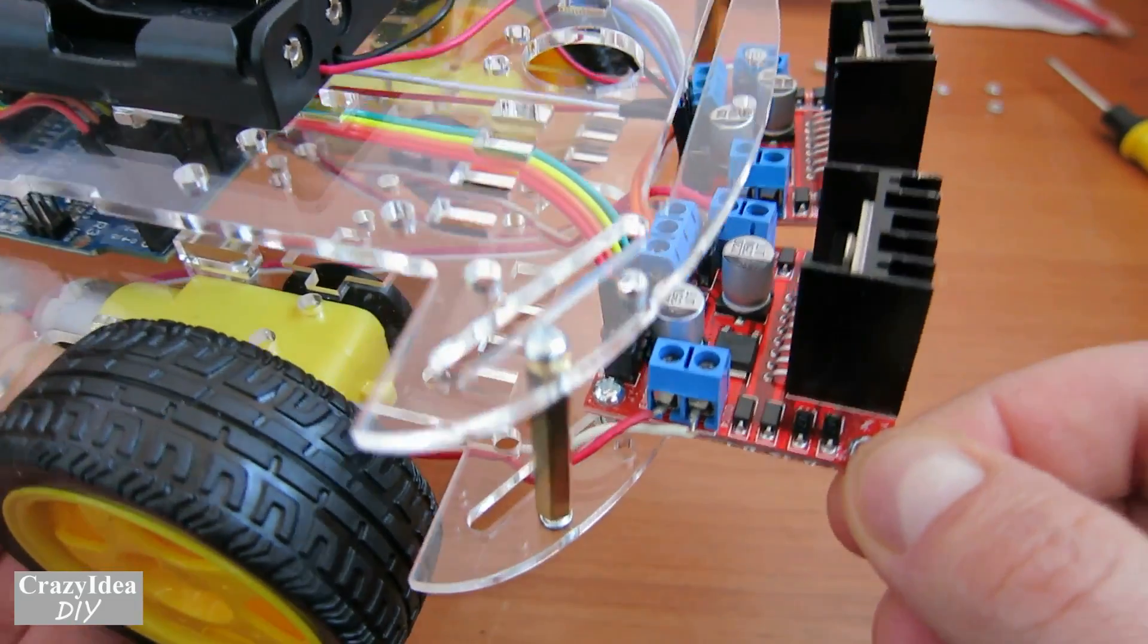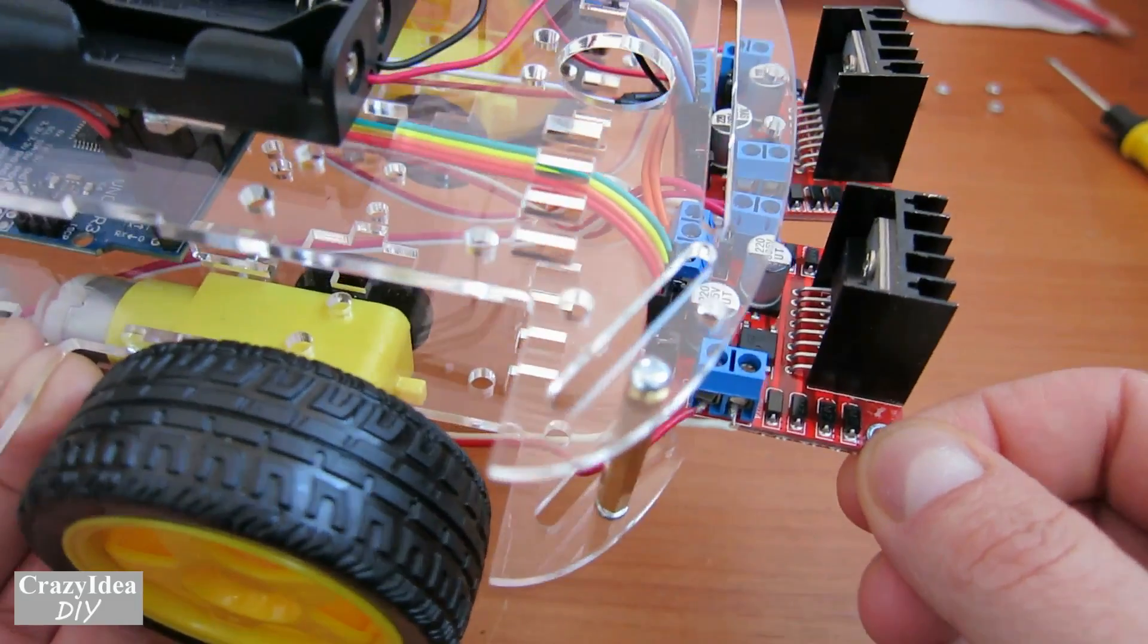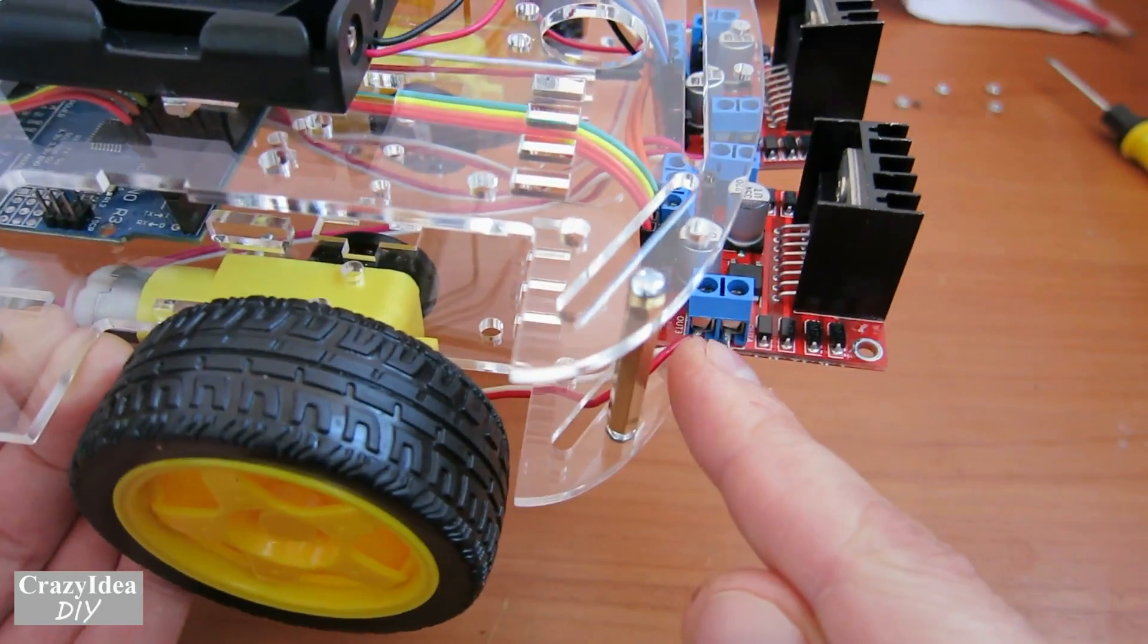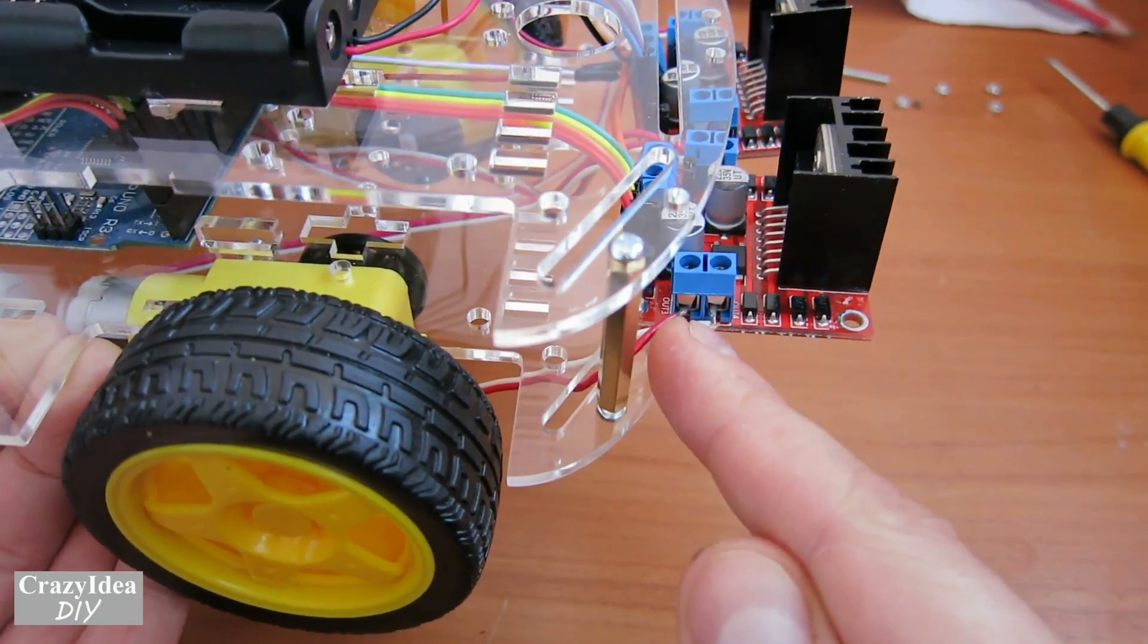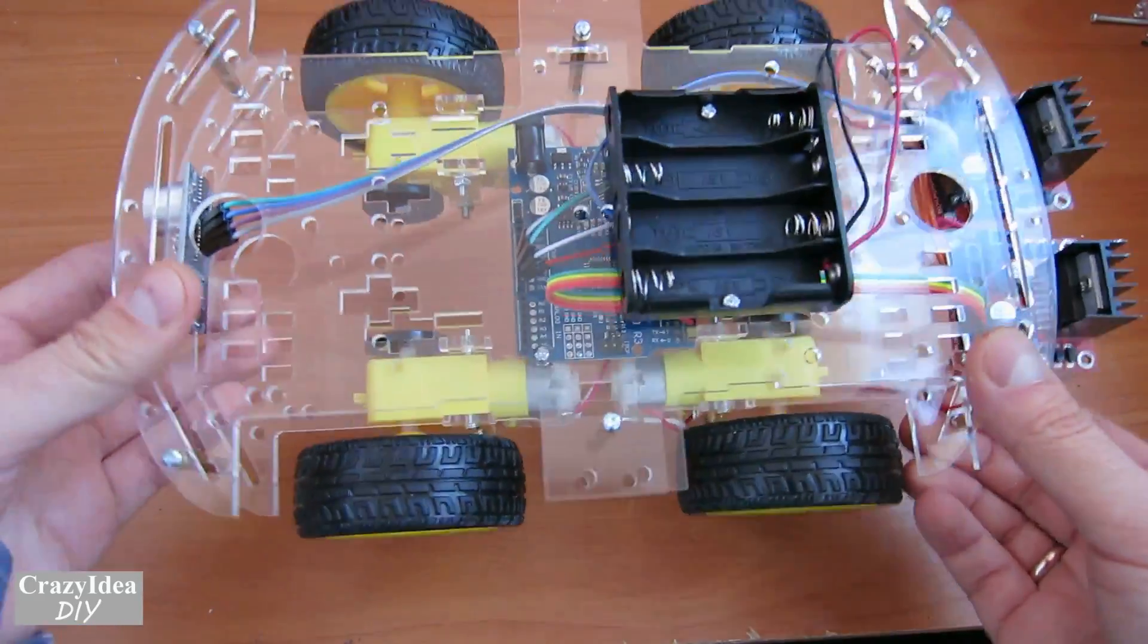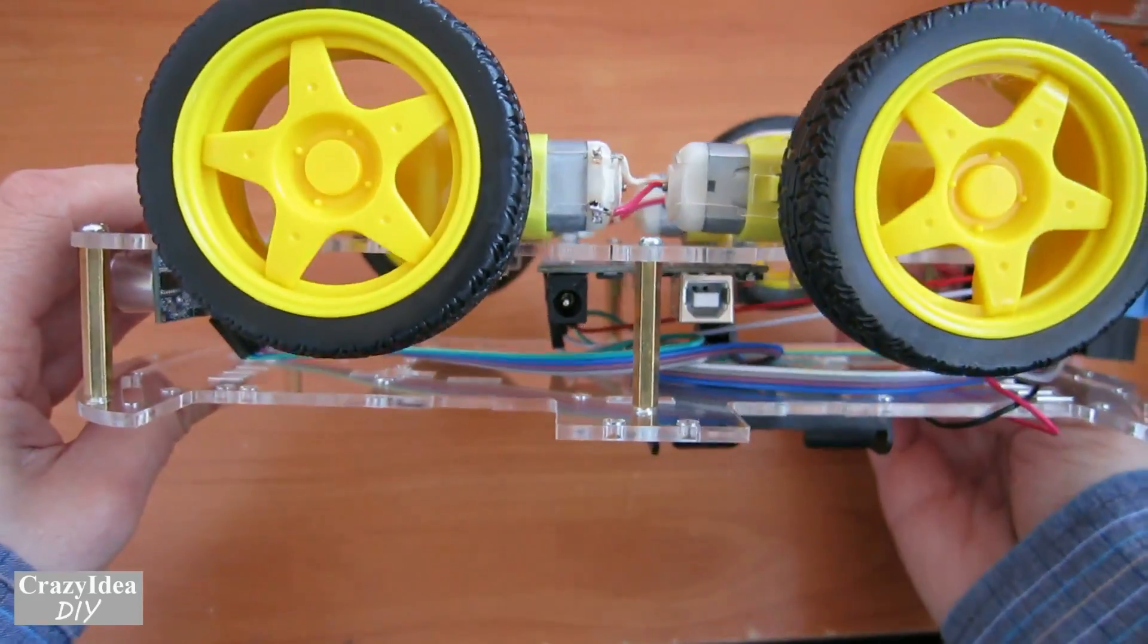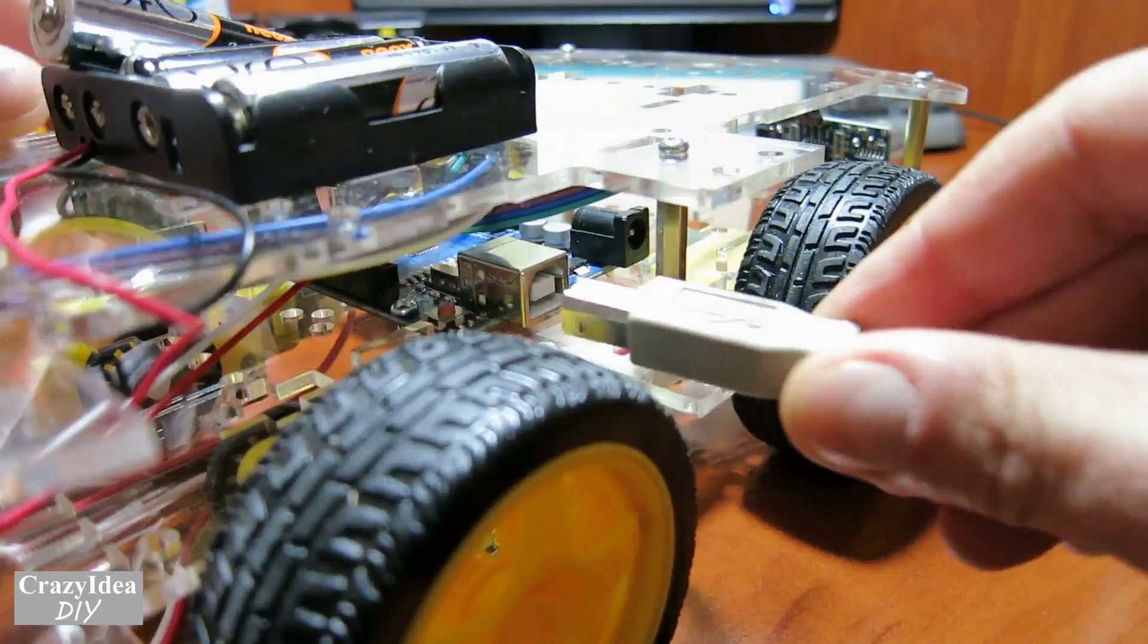So friends, if you see that some of the wheels spin in the wrong direction, it is necessary to change the connection. Now install the drivers for Arduino. You can find it in the description below the video.